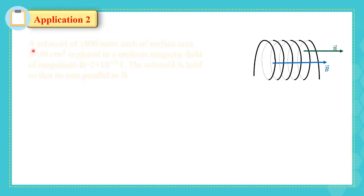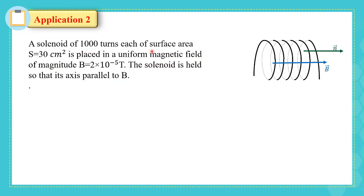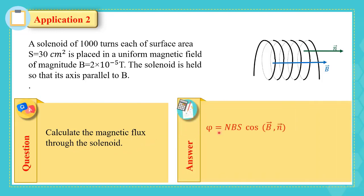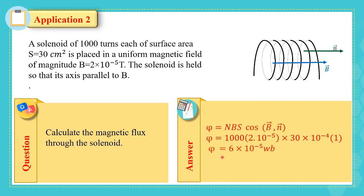Application 2: A solenoid of 1000 turns, each of surface area S = 30 cm², is placed in a uniform magnetic field of magnitude B = 2 × 10⁻⁵ T. The solenoid is held so that its axis is parallel to B, meaning the angle between the normal and B is 0°. Calculate the magnetic flux: Φ = NBS cos 0° = 1000 × (2 × 10⁻⁵) × (30 × 10⁻⁴) × 1. The answer is Φ = 6 × 10⁻⁵ Weber.